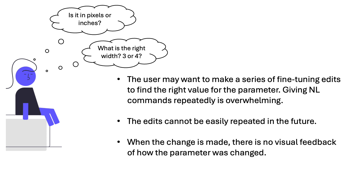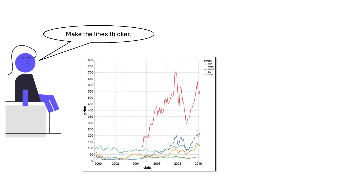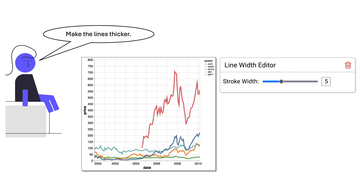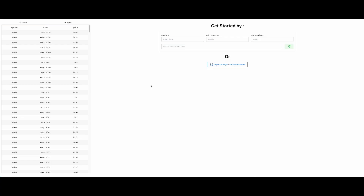To solve all these problems, we introduce Dynavis. Dynavis automatically generates UI widgets from users' natural language commands. Let's take the same example of Alice. When she gives the natural language command 'make the lines thicker', Dynavis not only edits the chart, but also provides her a UI widget she can further use to make fine-grained edits. To understand Dynavis, let us look at a scenario with Alice, a consultant analyzing stock trends of technology companies. We will show you how she uses Dynavis to create visualizations to present her analysis results.